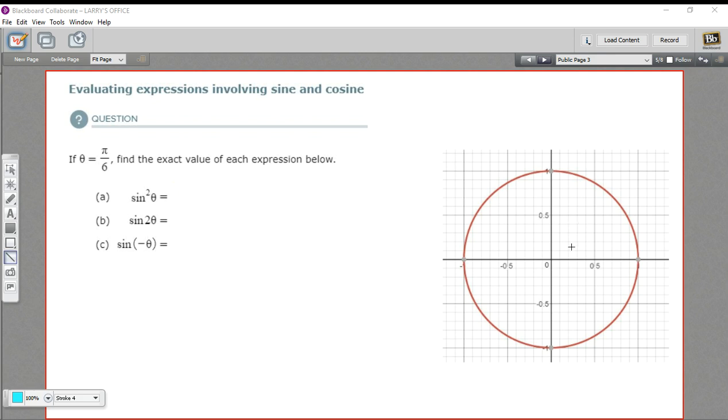So the first thing we need to do is plot that on our unit circle so we know what we're talking about. There is pi over 6.